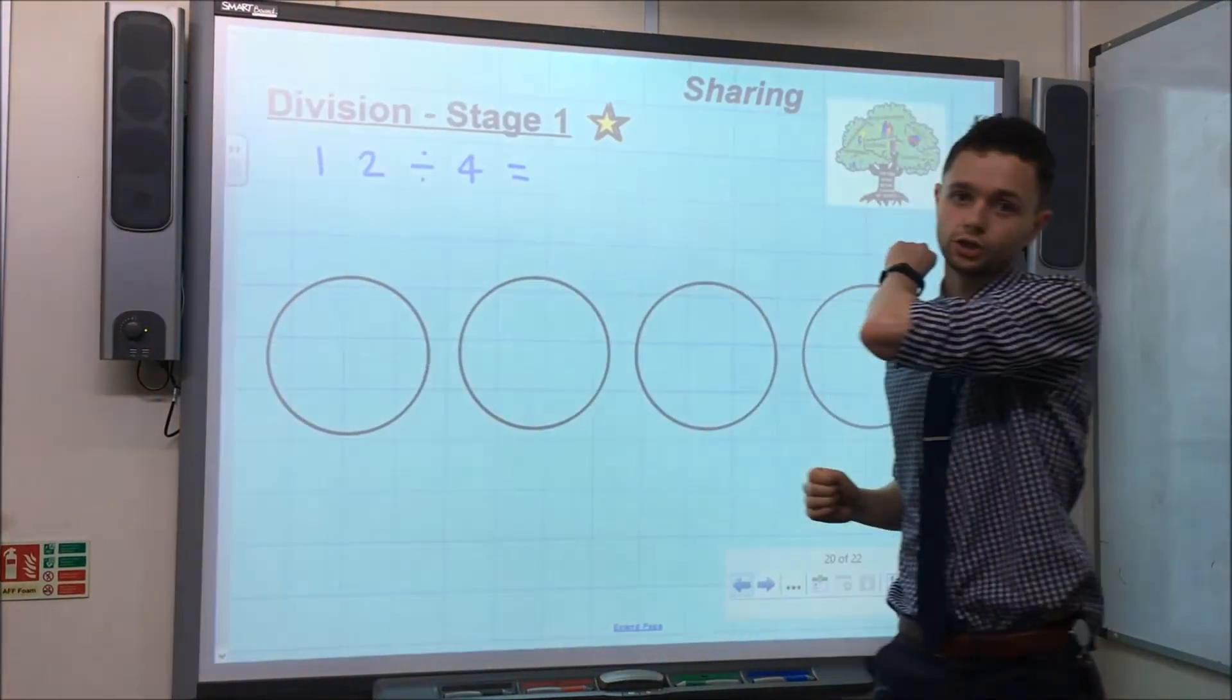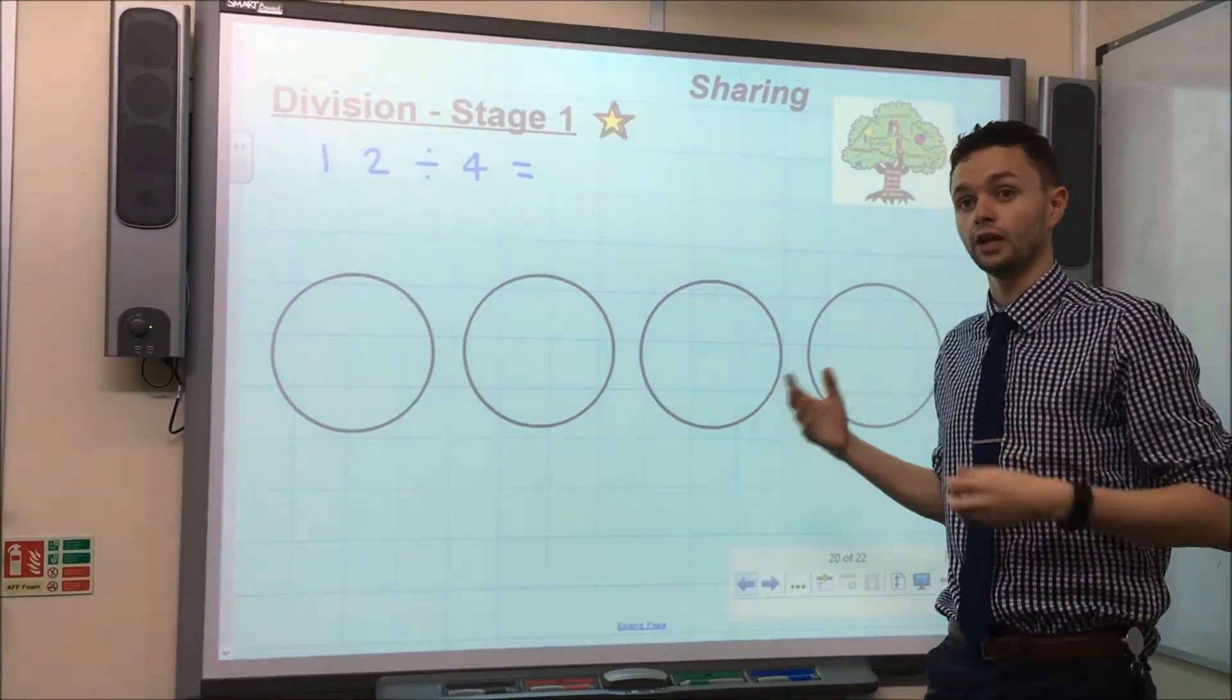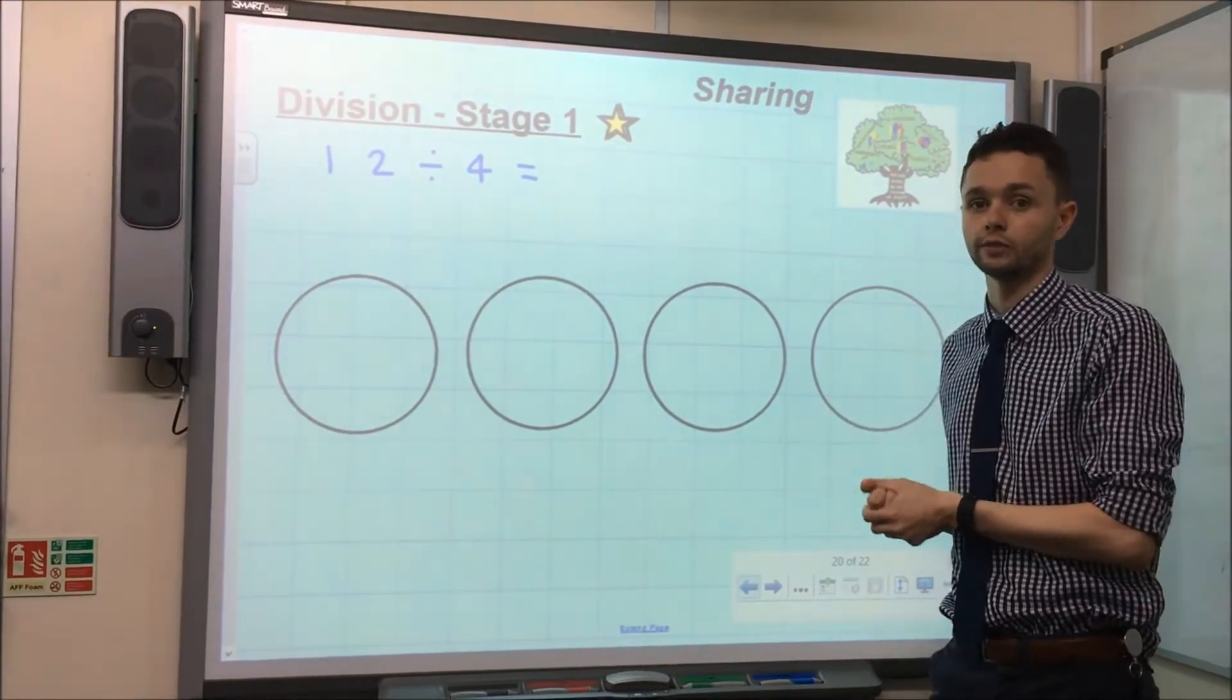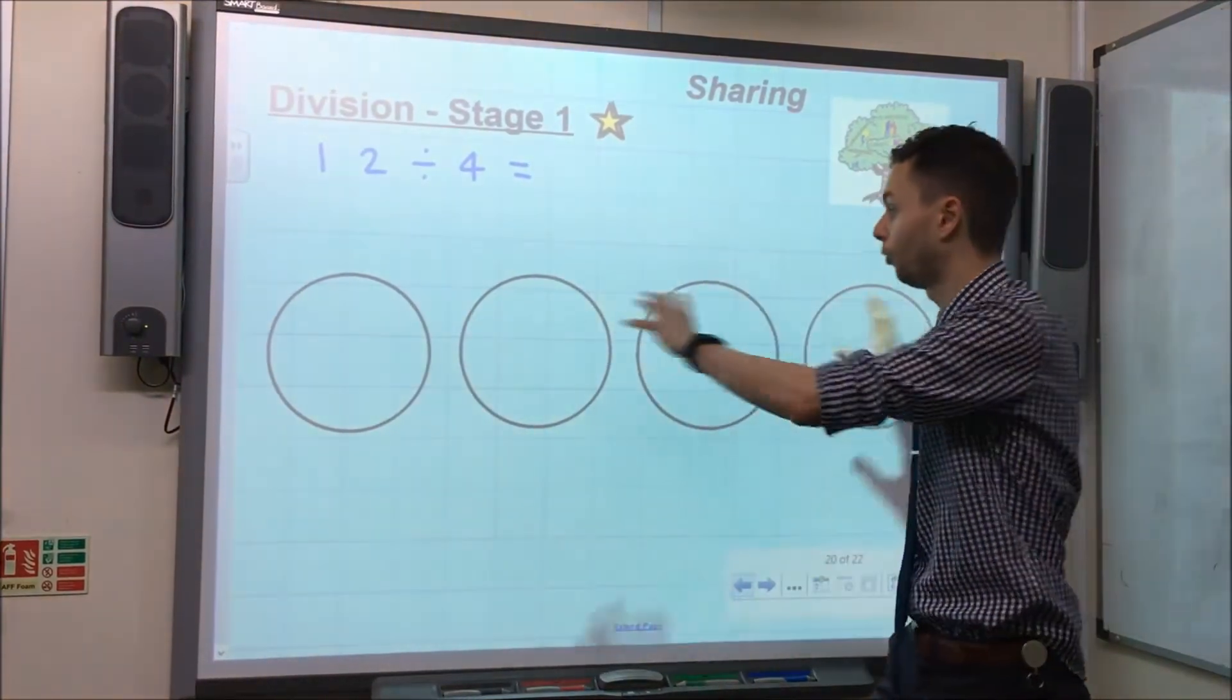So I've got here 12 counters and you can use counters, objects, anything at all to pictorially show how you are going to share 12 into 4 sections.